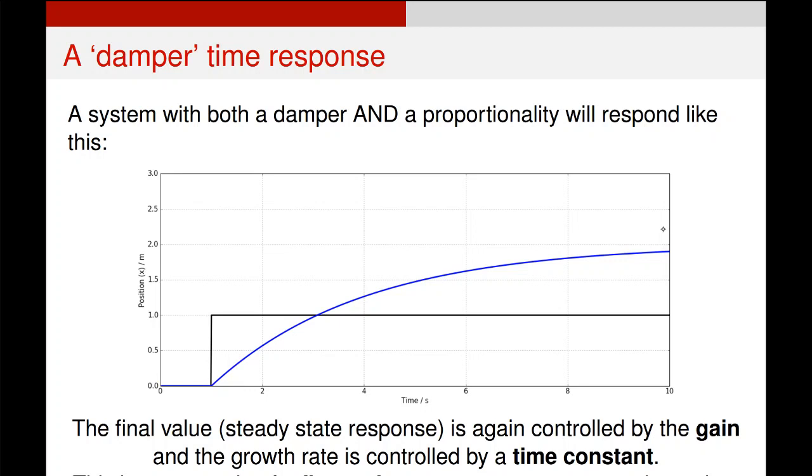And this is a classic example of what's called a first order response. This height up here, the difference in height, this is called the gain. And the gain for both this example and the previous one are the same. The difference here is the time constant. So depending on the actual amount of friction, the amount of resistance, it controls how quickly this line approaches that top original gain value.